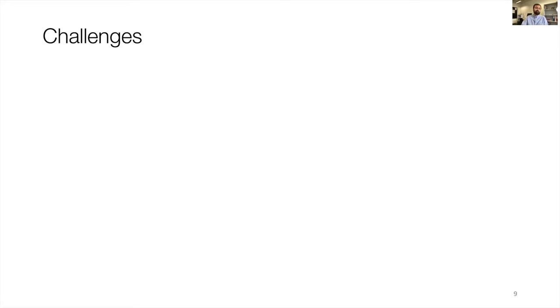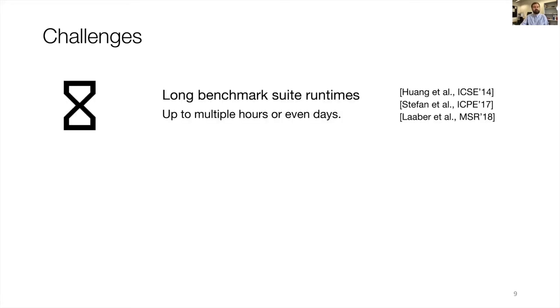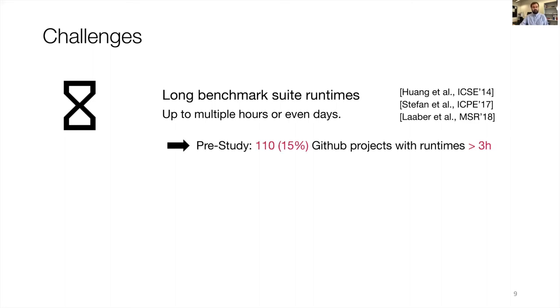There are a number of challenges with running microbenchmarks, and I want to point out two in particular. First, benchmark suites run for a very long time — up to multiple hours or even days, as reported by previous research. We ran a pre-study where we looked at open source GitHub projects with JMH benchmark suites, and found that 110 of these projects — 15% of the projects we looked at — have run times of three hours or longer.